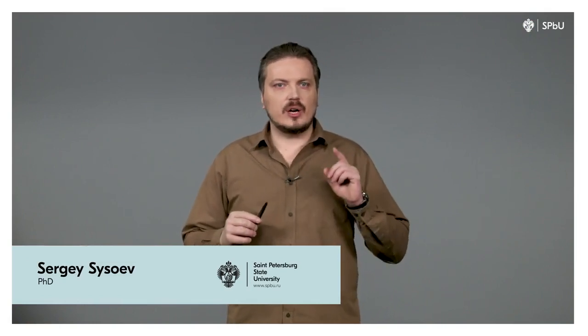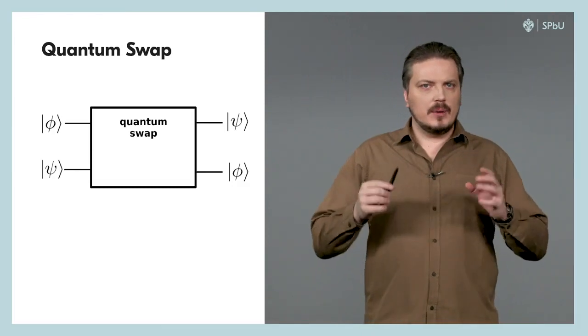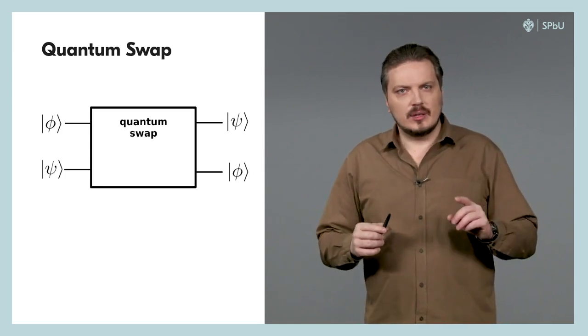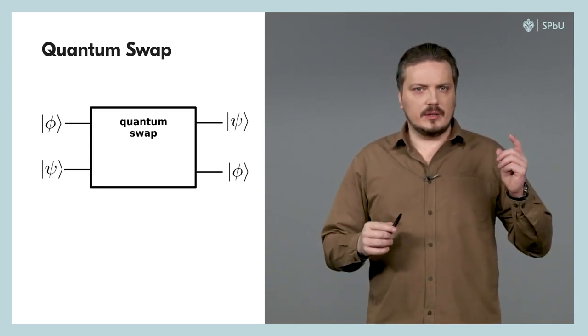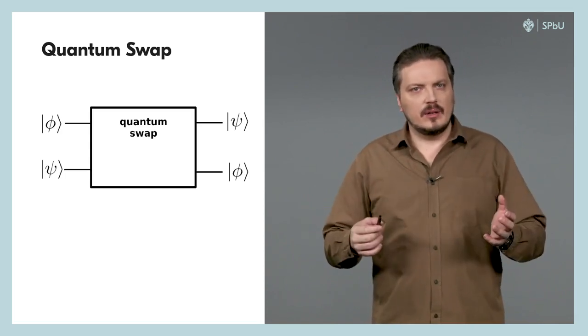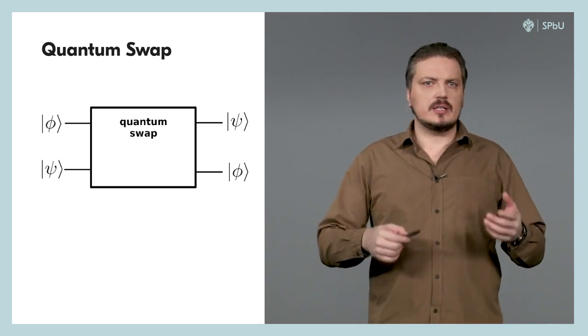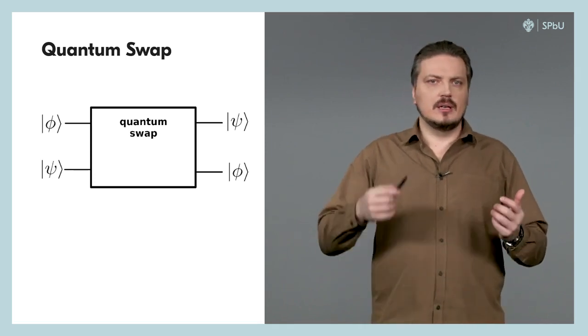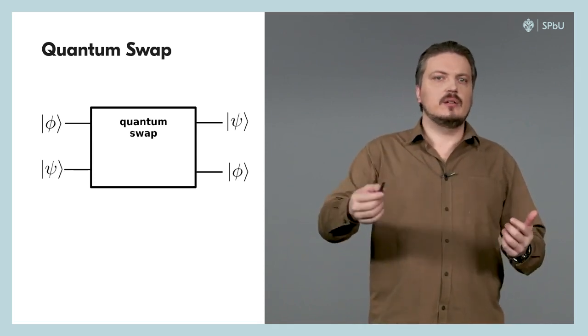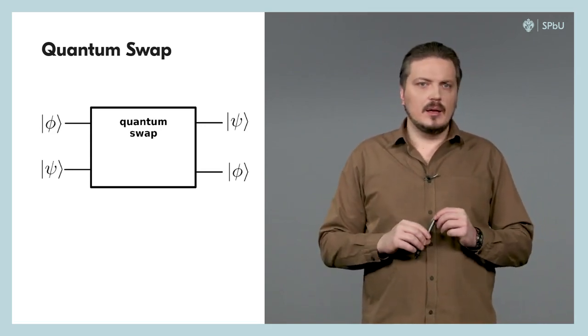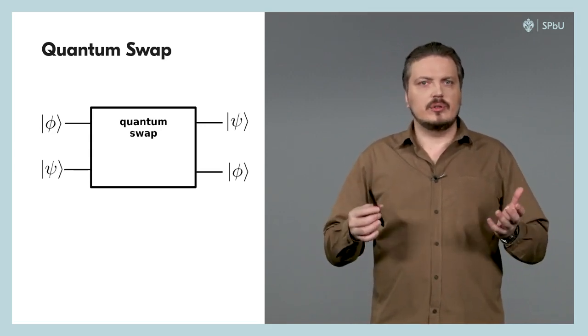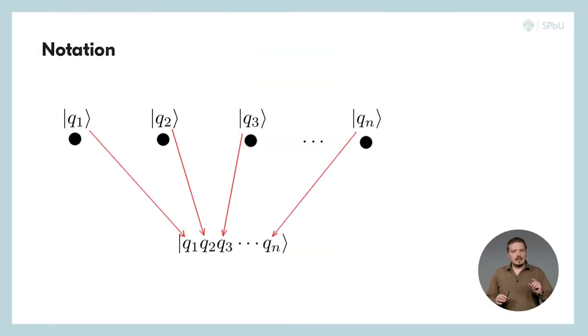Now we know that we can't copy quantum states, but at least we can transfer and exchange them. By exchange, I mean this procedure that we mentioned in the previous video. Let's suppose that one quantum particle, the upper one on this scheme, carries the state phi, while the other particle, the lower one, carries the state psi. And we want to design an algorithm which transfers state psi to the upper particle and state phi to the lower particle. This procedure is called swap, and it must be implemented by some unitary transform U.